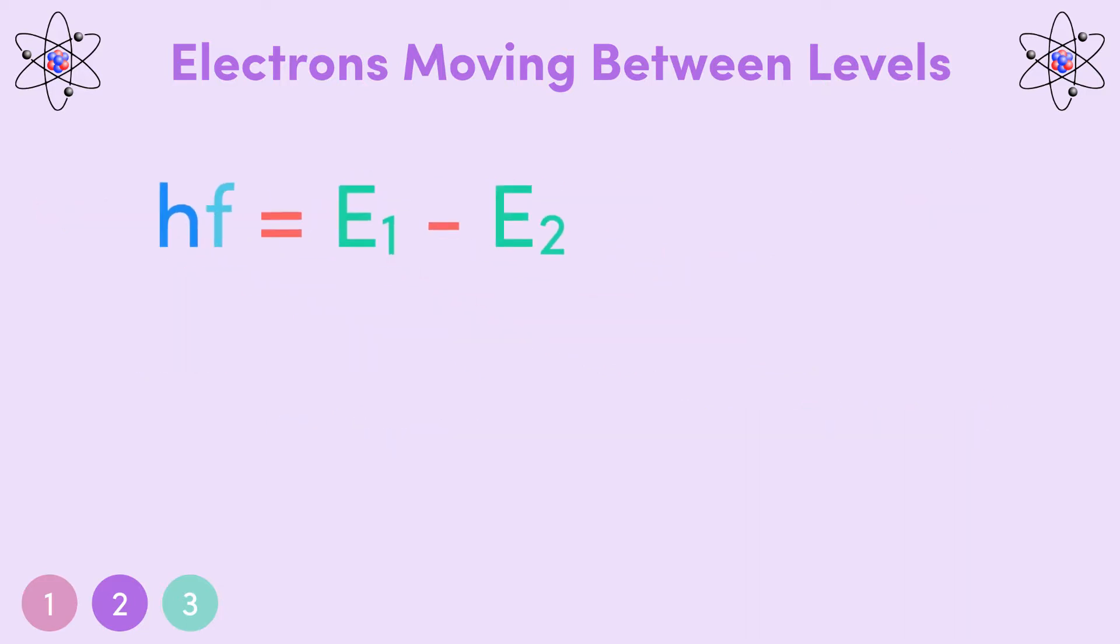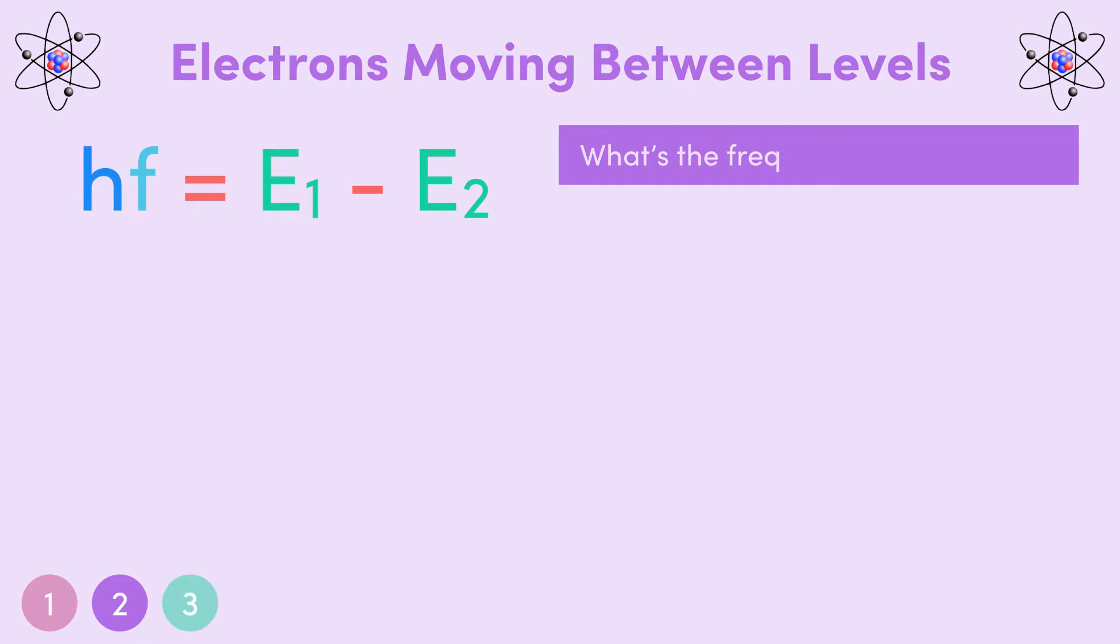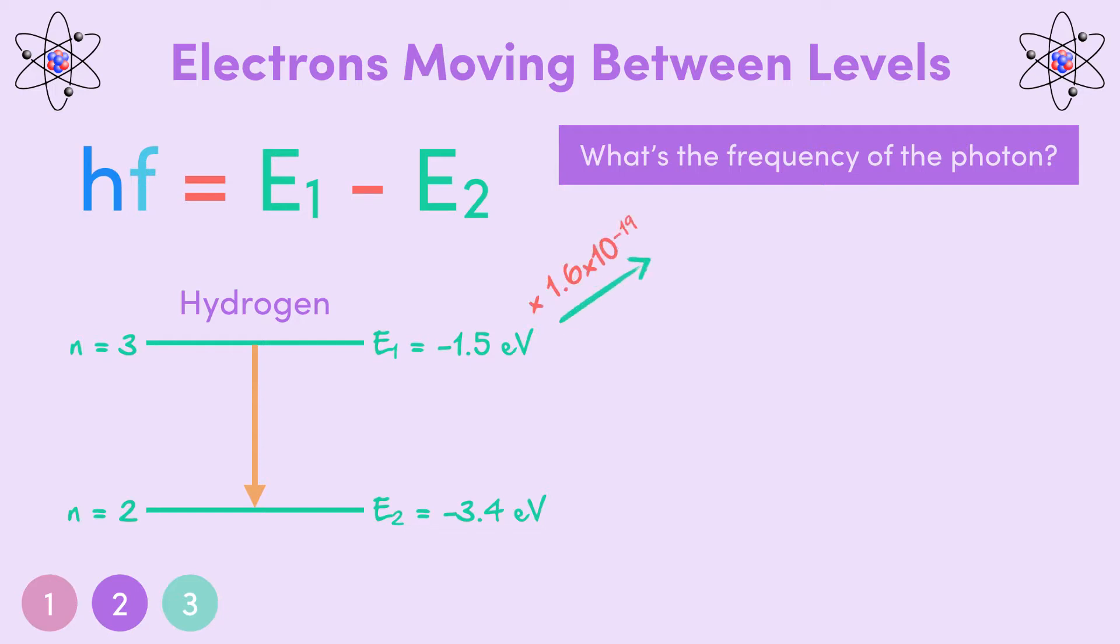So, for example, if we want the frequency of a photon emitted when an electron moves from the N equals 3 state of hydrogen, which has an energy of negative 1.5 electron volts, to the N equals 2 state, which has an energy of negative 3.4 electron volts, then we first must convert these energies into joules by multiplying by 1.6 times 10 to the negative 19. This gives us minus 2.4 times 10 to the negative 19, and minus 5.4 times 10 to the negative 19 joules, respectively.